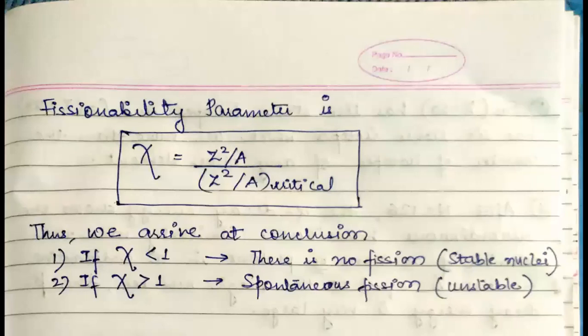Hence we define the fissionability parameter as chi equals Z square upon capital A upon Z square by capital A critical. We arrive at the following conclusion that if chi is less than 1 then the nucleus is stable against spontaneous fission and if chi is greater than 1 then there is no fission, that is the nucleus is unstable.